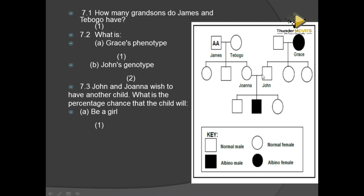What is the percentage chance that the child will be a girl? In sex crossings, the percentage chance of producing a girl or a boy is always 50%. We always have equal chances of producing a boy or a girl. So the answer is 50 percent.